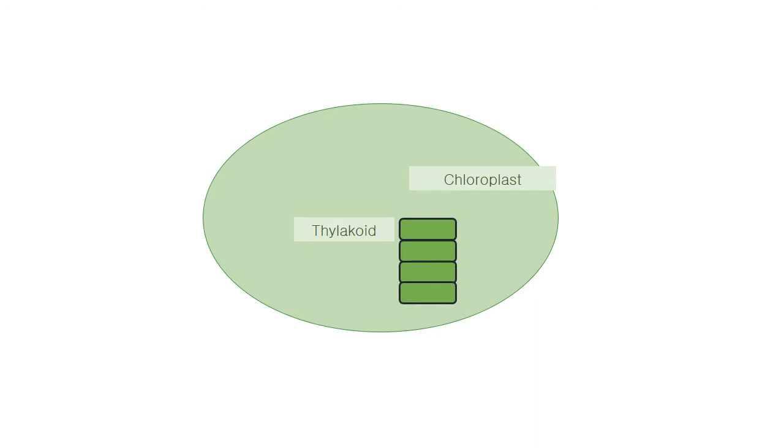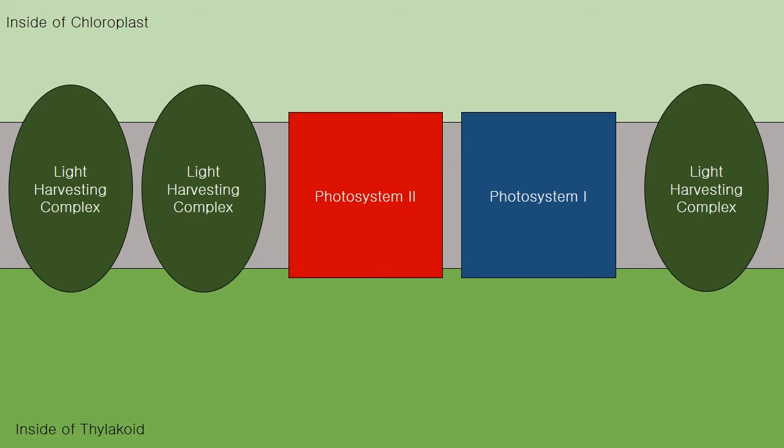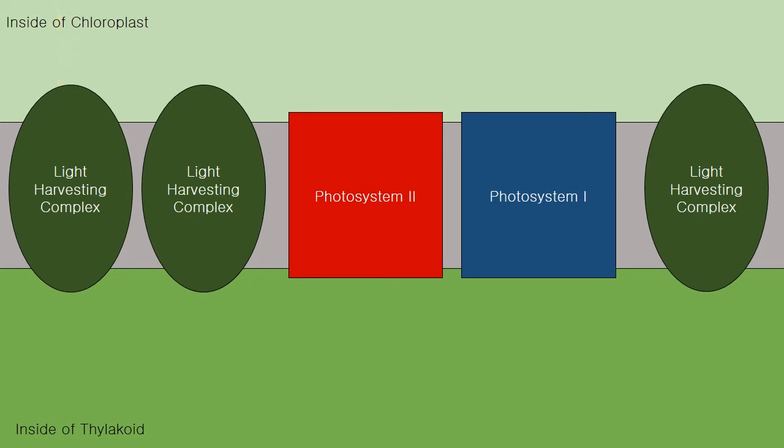Chloroplasts have membrane-bound compartments in them known as thylakoids. In the membranes of the thylakoid, we can find the structures that start the processes of photosynthesis. The pigments in plants are used to absorb photons. These are a part of pigment protein complexes, also called light harvesting complexes.